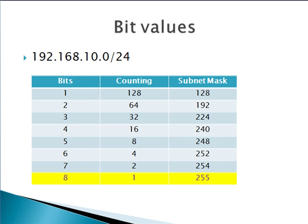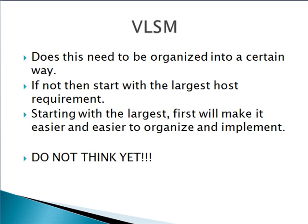Let's get into the variable length subnet mask. First thing you need to do is look at the problem and figure out if it's asking you to do something specific — like put LAN1 on this subnet mask, LAN2 on this subnet mask. If it does not tell you any specific requirements, the easiest thing to do is start with whatever you need your largest host to be. VLSM is a lot easier to approach from the host perspective as opposed to trying to use network bits. So I always start with the largest host.